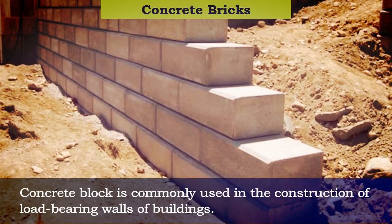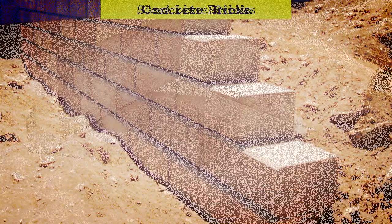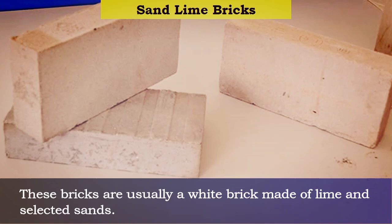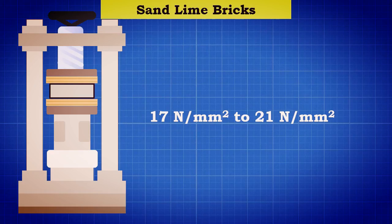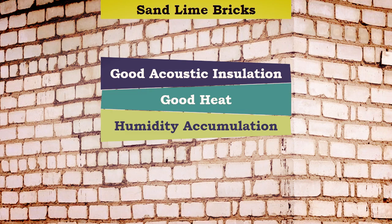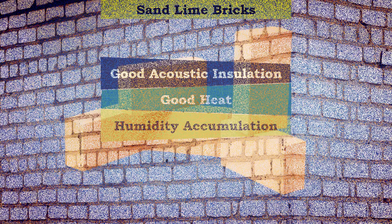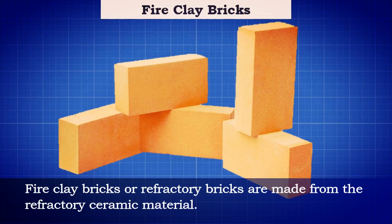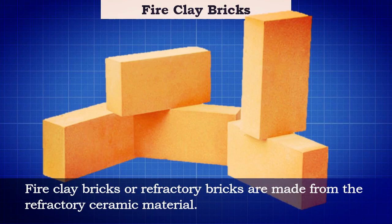Concrete blocks are commonly used in the construction of load-bearing walls of buildings. Sand lime bricks: these are usually white bricks made of lime and selected sands. The compressive strength of these bricks varies between 17 and 21 Newton per millimeter square. They are generally used for good acoustic insulation and good heat and humidity accumulation purposes.